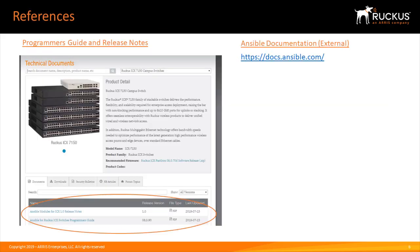Please find a programmer's guide available on the Ruckus support portal. Go to www.ruckusnetworks.com, under the support portal, under technical documents for ICX — you should find a programmer's guide for Ansible available for download today. It has basic instructions on how to install Ansible, copy the ICX libraries onto your Ansible environment, and run some playbooks. You can alternatively go to docs.ansible.com for further documentation, which is the official website for Ansible documentation.